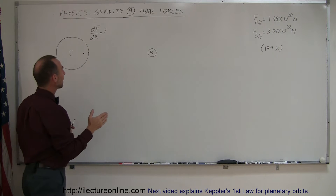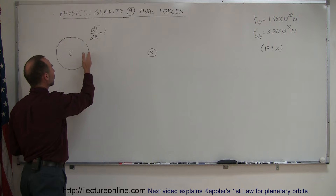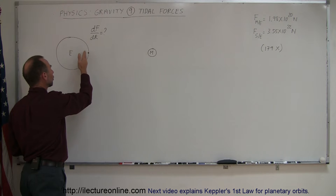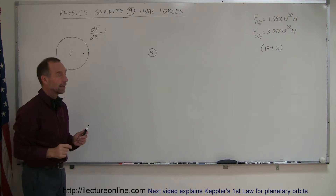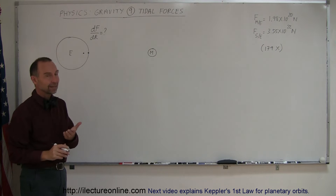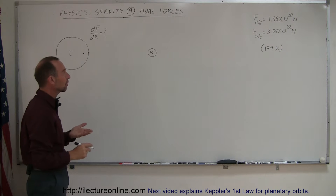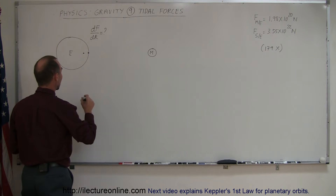So how quickly does the force change as you go from a point on the surface of the Earth to a point further from the Earth? And that is dF/dR. So let's calculate the dF/dR of the universal equation of gravity.